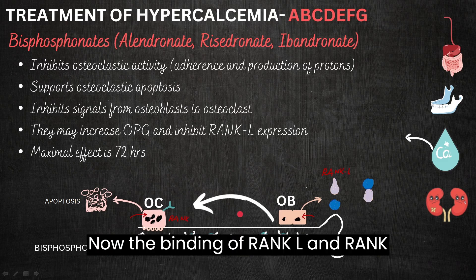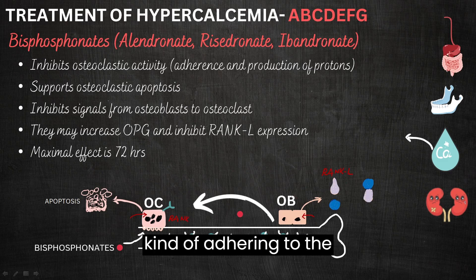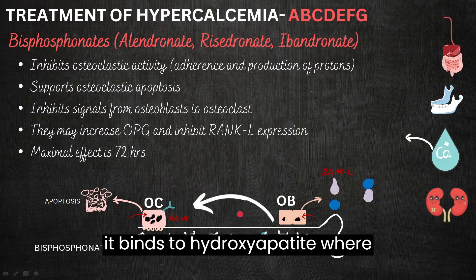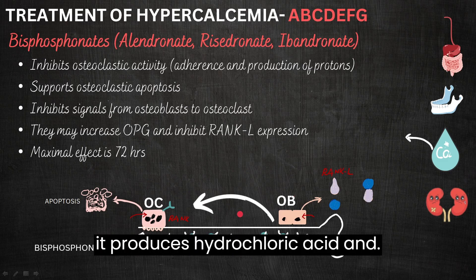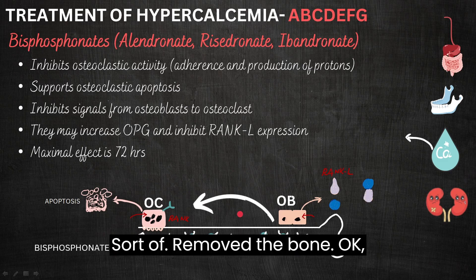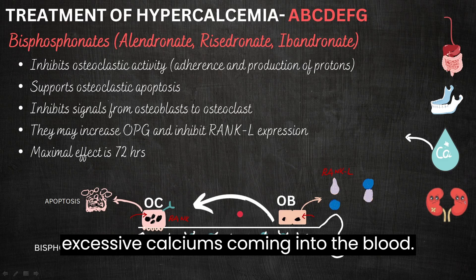The binding of RANK-L and RANK leads to osteoclasts adhering to the ruffled bone surface, where it binds to hydroxyapatite and produces hydrochloric acid to remove the bone. And that of course will lead to excessive calcium coming into the blood.